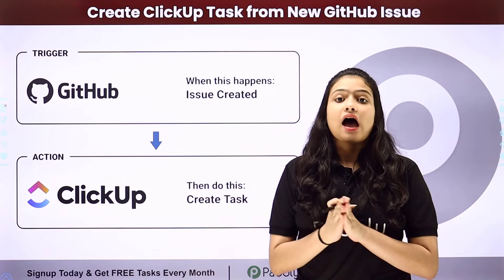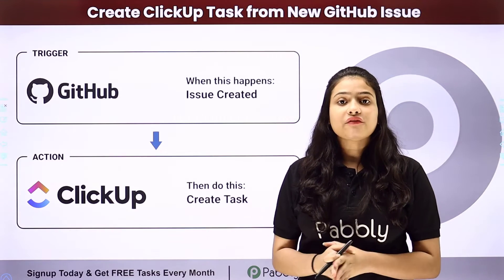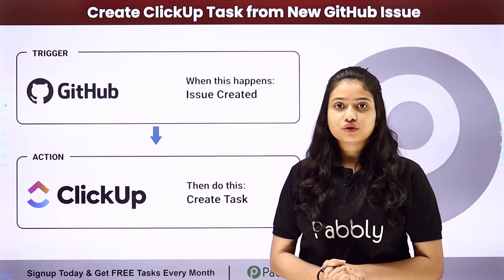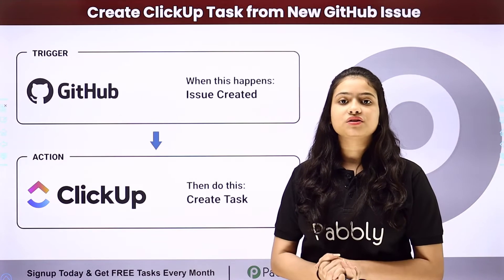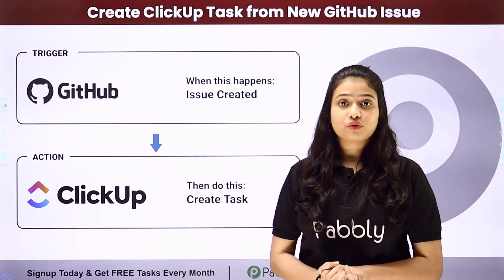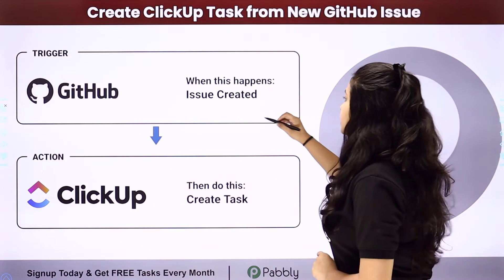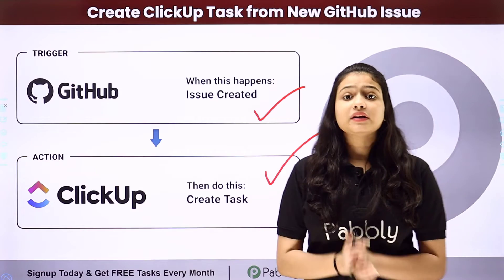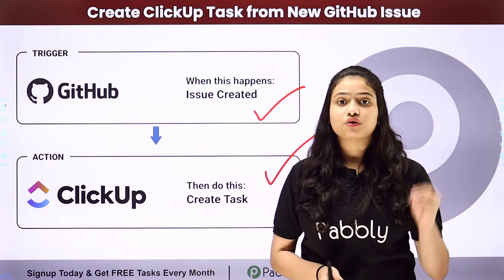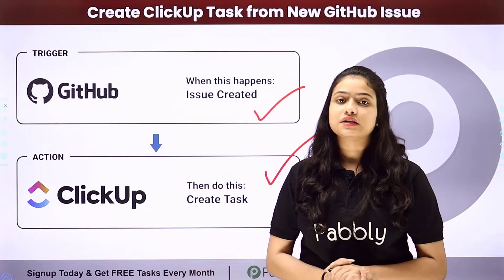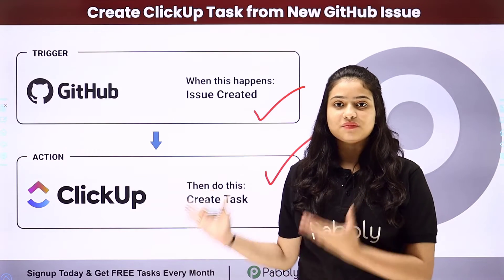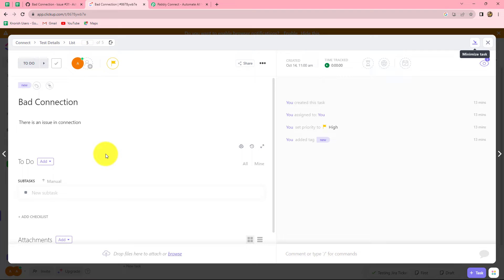Because these two applications do not have any native integration between them, we are going to use Pabbly Connect, which is an amazing automation and integration software. We have GitHub in our trigger and ClickUp in our action, so we will be connecting both of them using Pabbly Connect in order to automate this entire process.